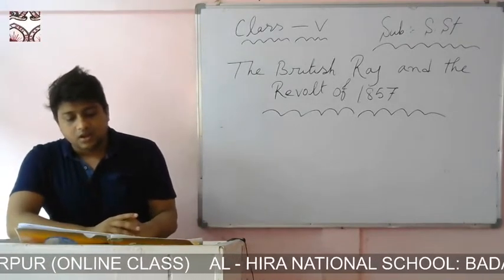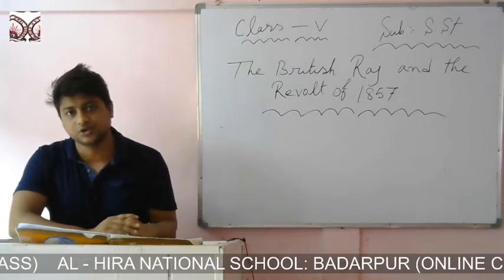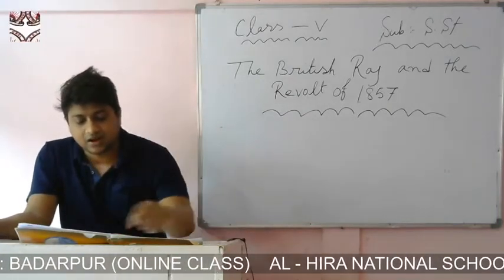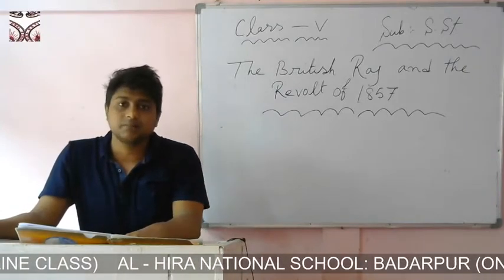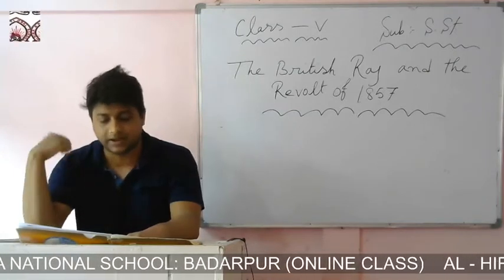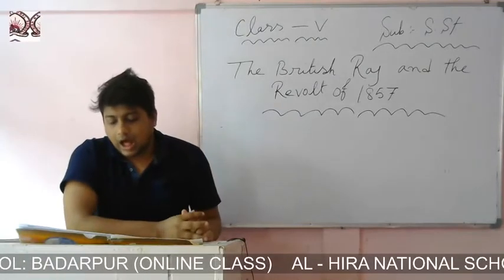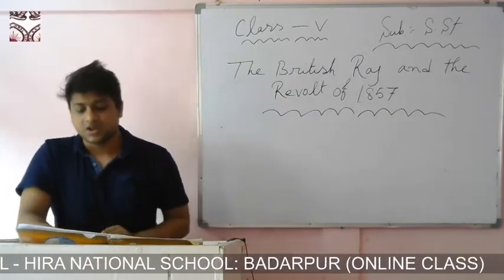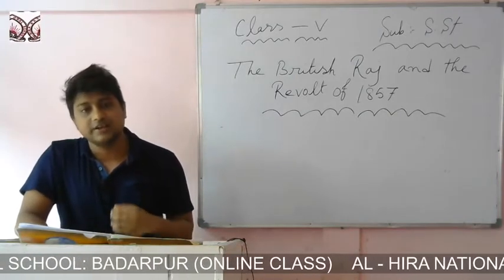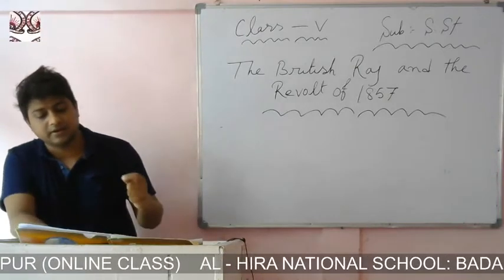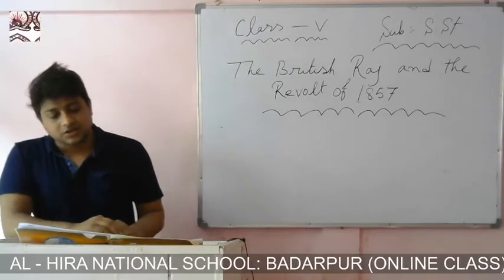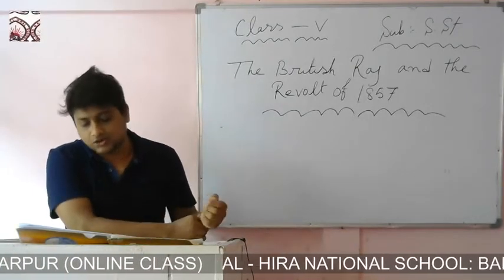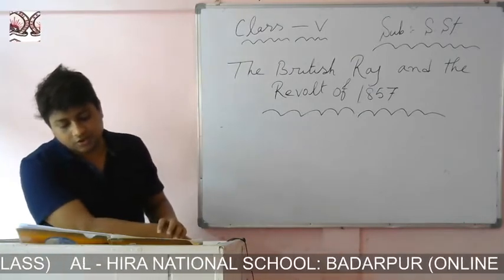Mangal Pandey, a young sepoy, fired the first shot of the revolt on March 29, 1857. The army revolted against the 100-year-old British rule. The first strike of the revolt started at Meerut, near Delhi, and the revolt spread over a large part of northern and central India.